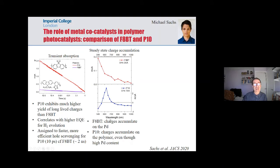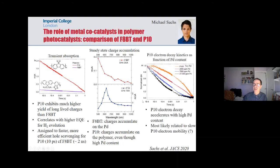When we look at where the electrons go, it's rather striking: the electrons in typical unpurified F8BT go onto the palladium. In P10, they don't — they stay on the polymer — even though P10 has more palladium than F8BT. We've understood this because P10 is a rather poor electron transport material, at least that's the most likely understanding.